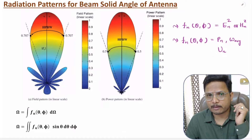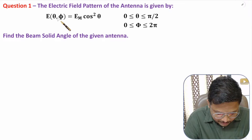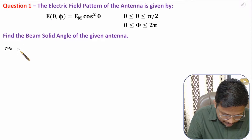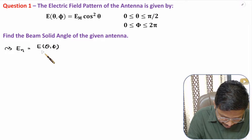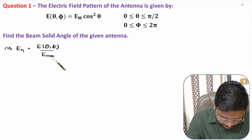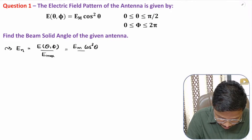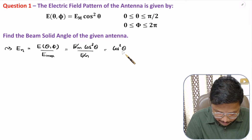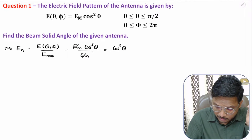Now let us have one problem. We have been given an electric field. To calculate beam solid angle based on electric field, first we need to normalize the electric field. To normalize the electric field, the normalized electric field will be the given electric field divided by the maximum value of electric field. Here the given electric field is Em·cos²(θ), and the maximum electric field value is Em. So the normalized electric field is cos²(θ). Now we have the normalized electric field and can identify the function.